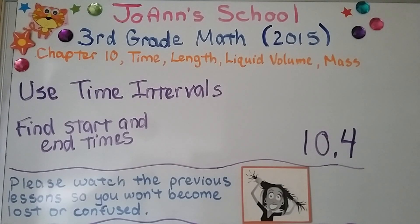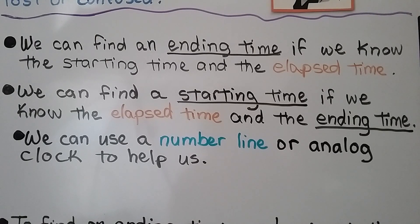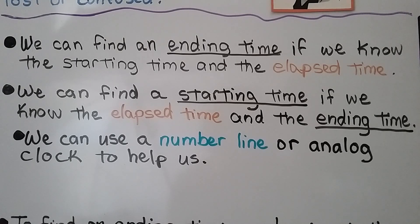Lesson 10.4 — we're going to use time intervals. We're going to find start and end times. We can find an ending time if we know the starting time and the elapsed time, and we can find a starting time if we know the elapsed time and the ending time. We can use a number line or analog clock to help us.